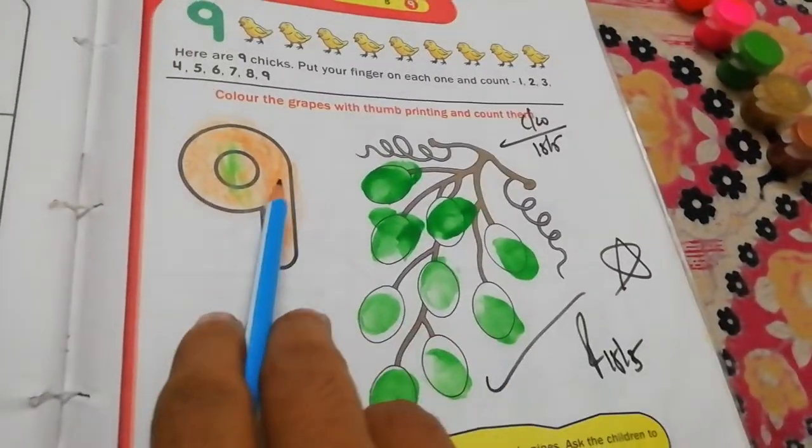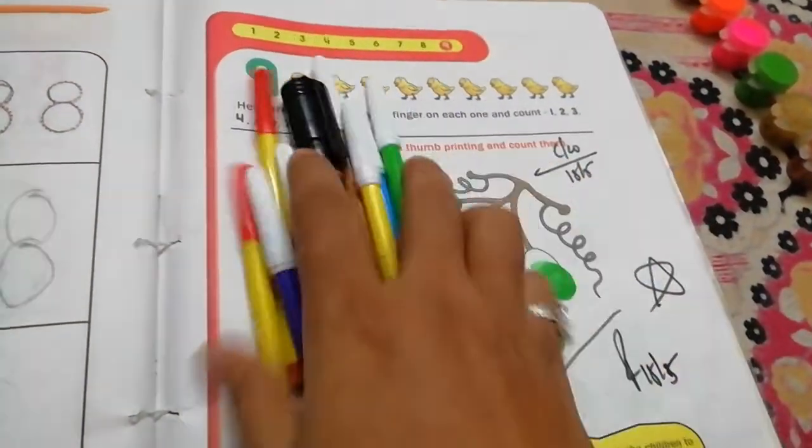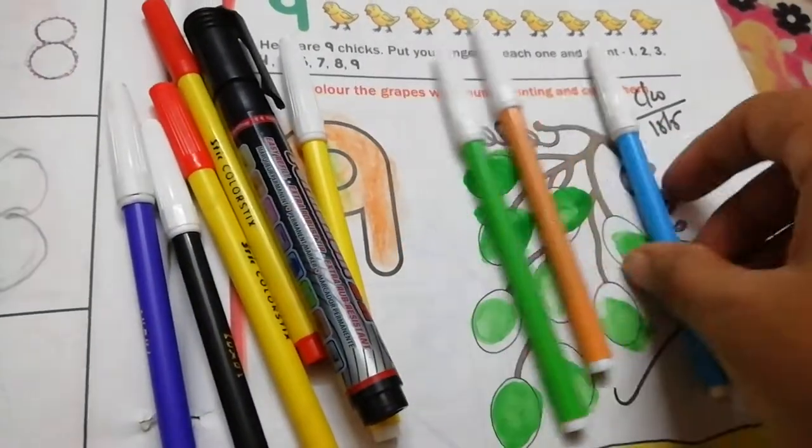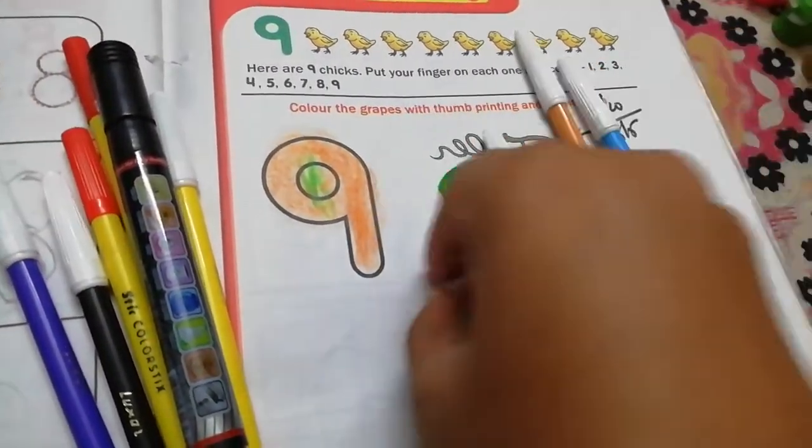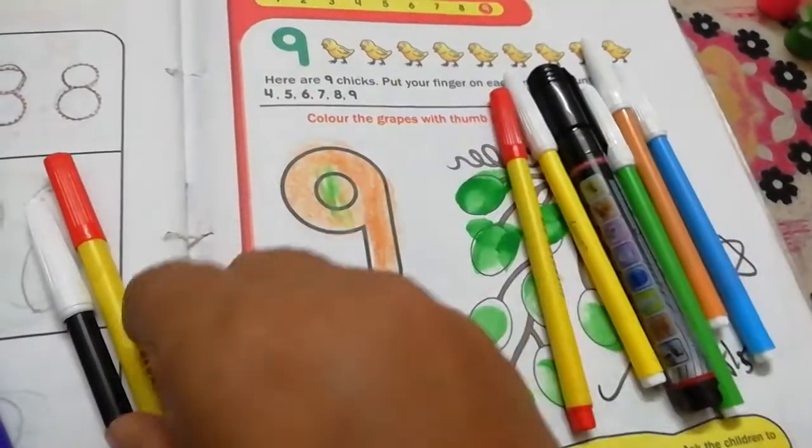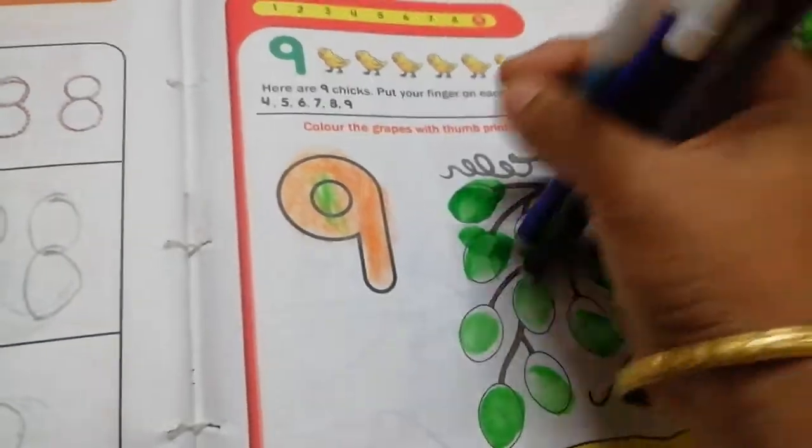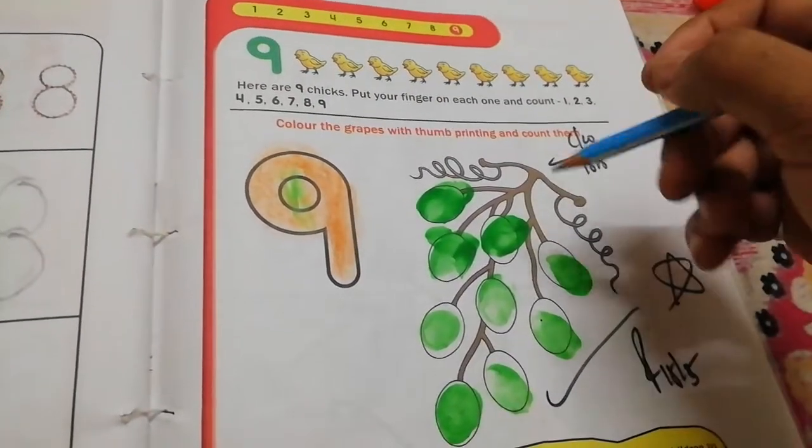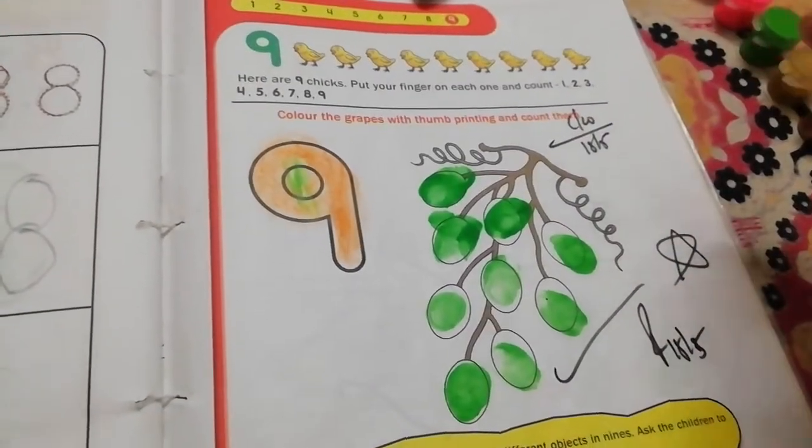Dear student, you will also color number 9. Next is how many sketches are there? How many sketches are there? Count with me. 1, 2, 3, 4, 5, 6, 7, 8, 9. Here are 9 sketches. Now you also take some things and count them. Count 9 things. Okay?